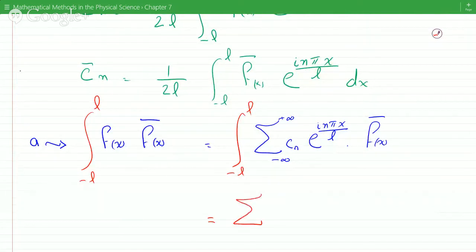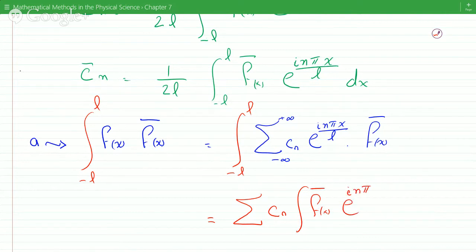And this would give us the summation. We can bring the integral inside the summation, C_n integral. And you can do that, e to the i n pi x over L dx minus L to L.